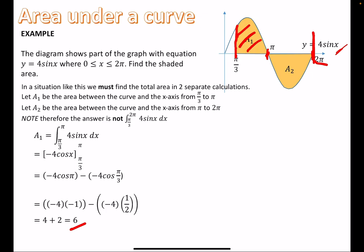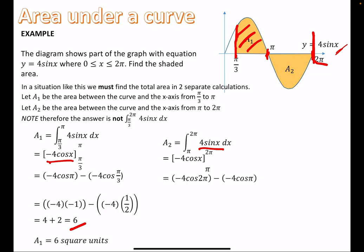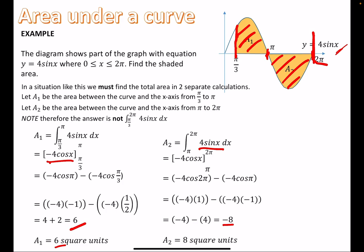Area 2: same integral −4 cos x, but between π and 2π. Substitute 2π: cos 2π = cos 360° = 1, so −4 × 1 = −4. Substitute π: cos π = −1, so −4 × −1 = 4. Result: −4 − 4 = −8. We knew it would be negative because it's below the x-axis. Crucially, don't do 6 + (−8), as they'll cancel. Make area 2 positive first: |−8| = 8. Total area = 6 + 8 = 14 square units.